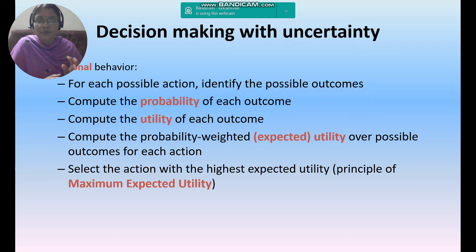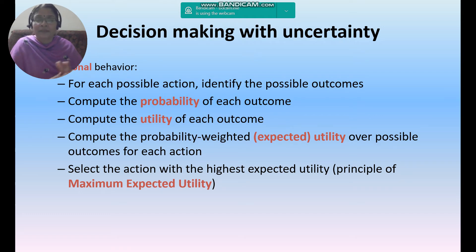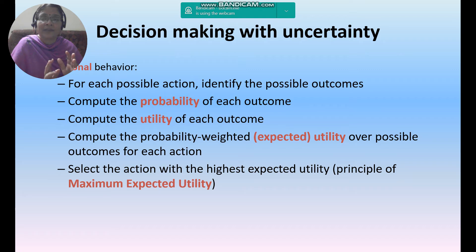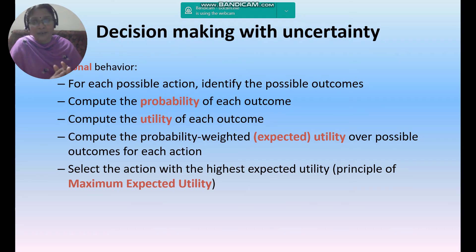That is the utility of each and every outcome, and the probability-weighted utility over possible outcomes of each action — that is expected utility. Select the action with the highest expected utility, whichever has the maximum expected utility. These five steps we have to take into consideration by exhibiting rational behavior while taking decisions in uncertainty environments.